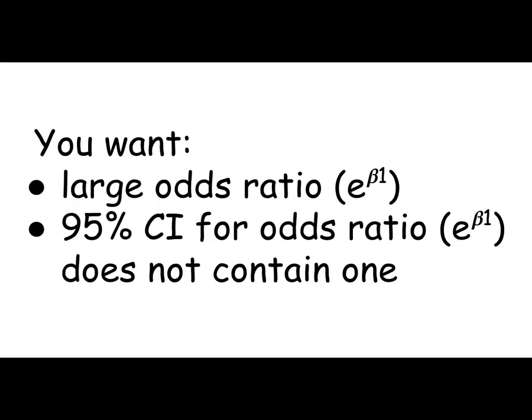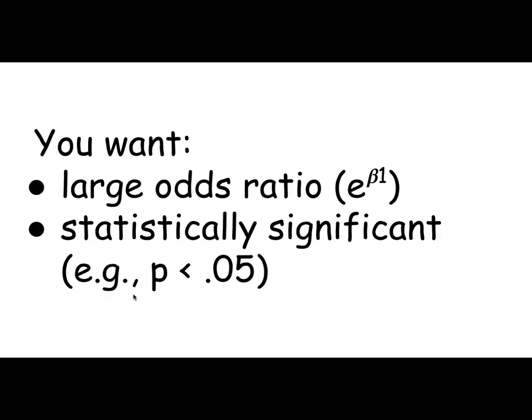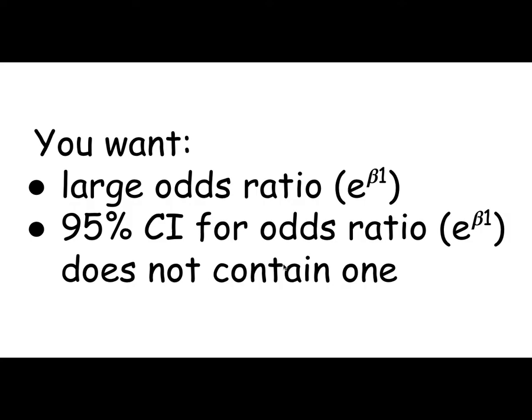Now if they report confidence intervals for the odds ratios, what you want to see is that the odds ratio does not contain one. If you remember, if the odds ratio is one, that means there's no effect. So if one is inside the confidence interval, we can't rule out the possibility that there really is no effect.